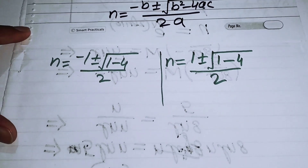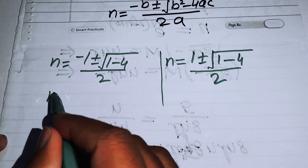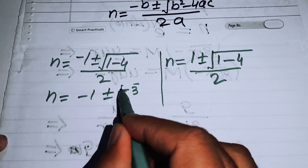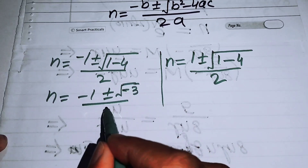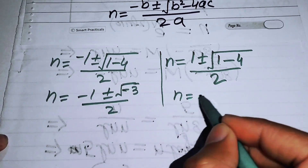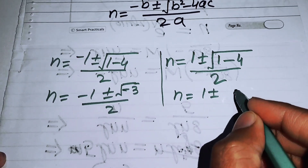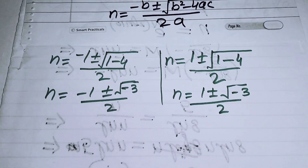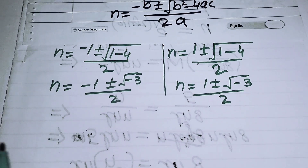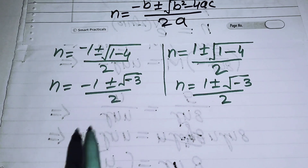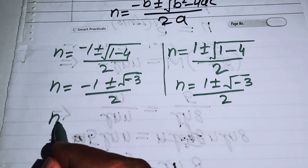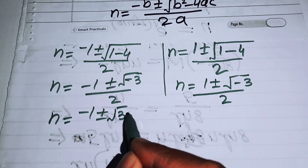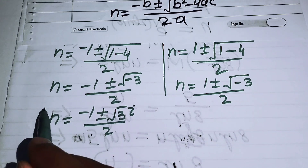Simplifying the first equation gives n equals minus 1 plus or minus square root of minus 3, over 2. The second gives n equals 1 plus or minus square root of minus 3, over 2. Since we have a negative sign under the square root, we write these as n equals minus 1 plus or minus root 3 times i, over 2.